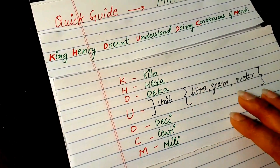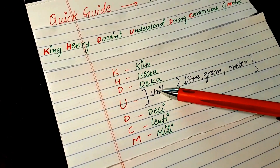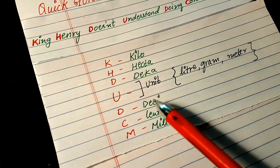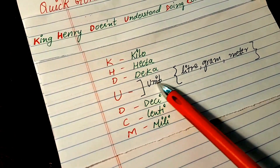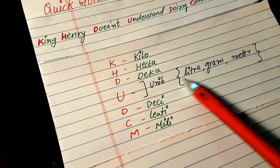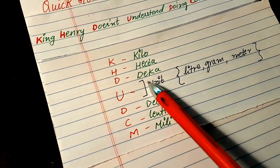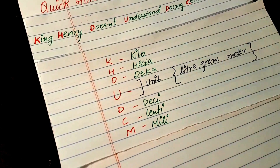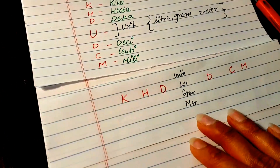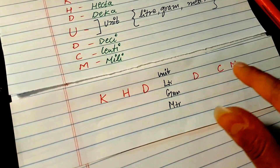Here is the table: K is kilo, then hecta, deca, U is the unit — we'll come back to that — then deci, centi, milli. The unit position could be liters, grams, or meters — whatever unit is given in the question is going to fall right here in the unit place. This is our chain of units.